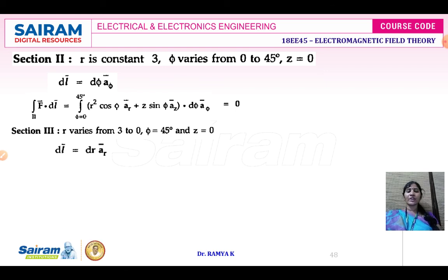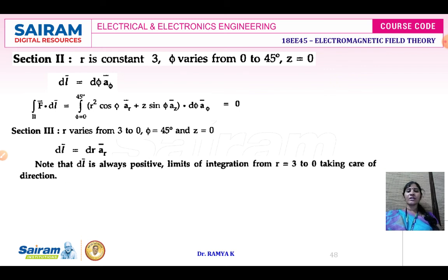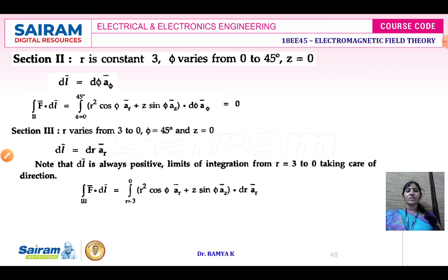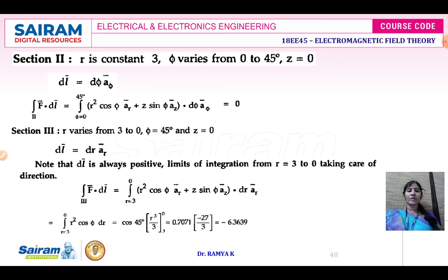For the third segment, dl equals dr times ar, but the direction must be considered properly. When r goes from 3 to 0, the answer is minus 6.3639. The net circulation of the field is 9 plus 0 minus 6.3639, which equals 2.636. Thank you, students.